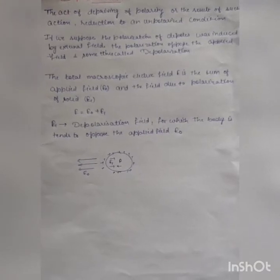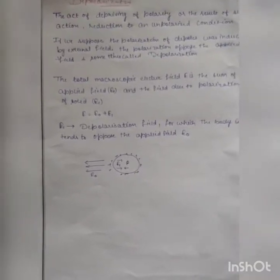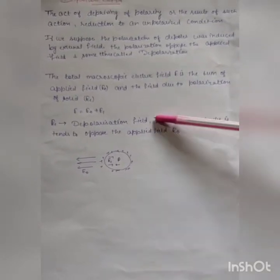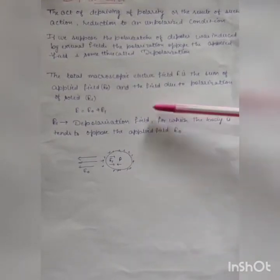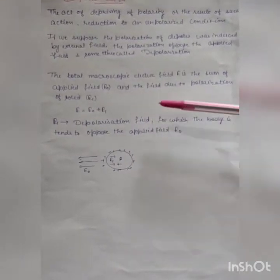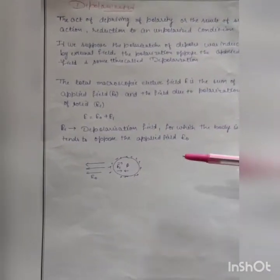The total macroscopic electric field is the sum of the applied field and the field due to polarized particles. So we can say that E equals E0 plus E1, where E1 is called the depolarization field, which acts to oppose the electric field E0.